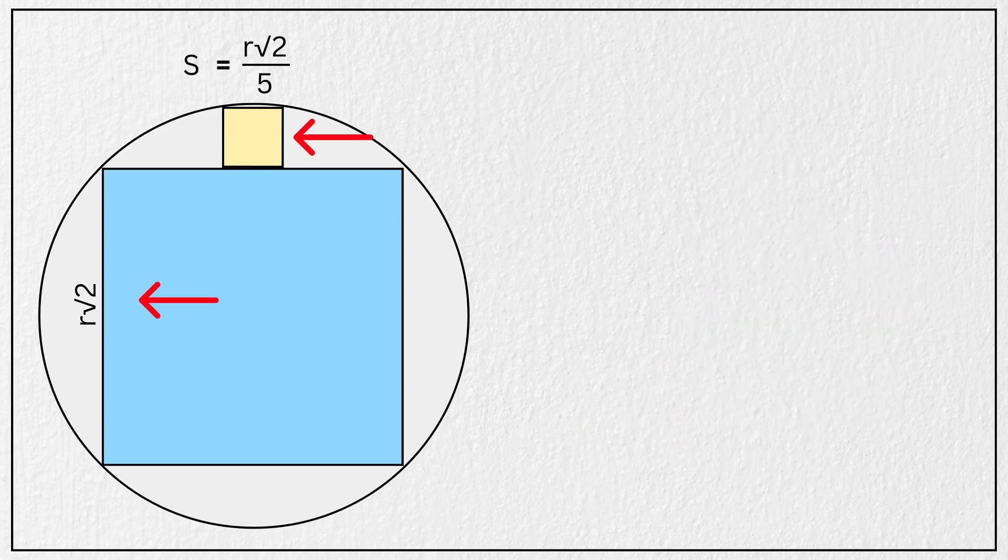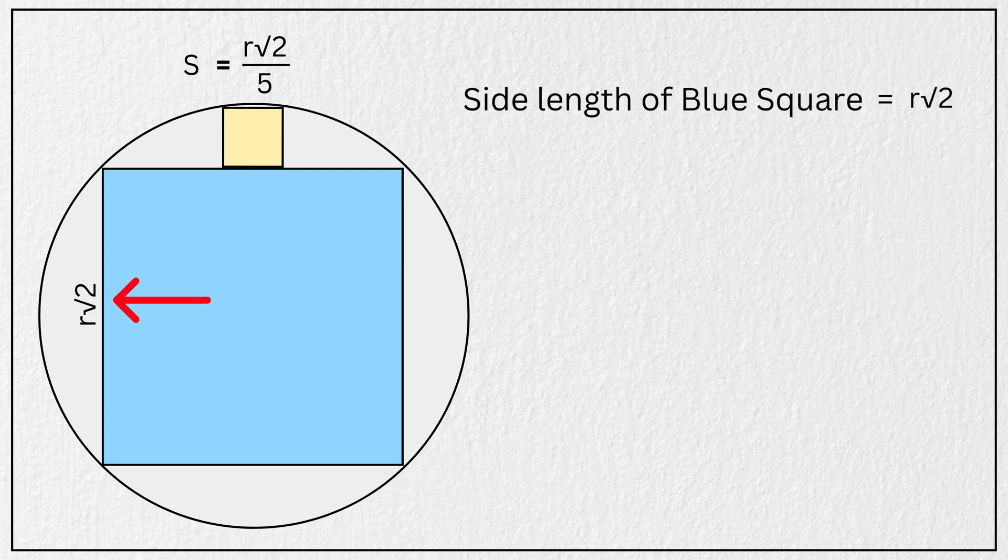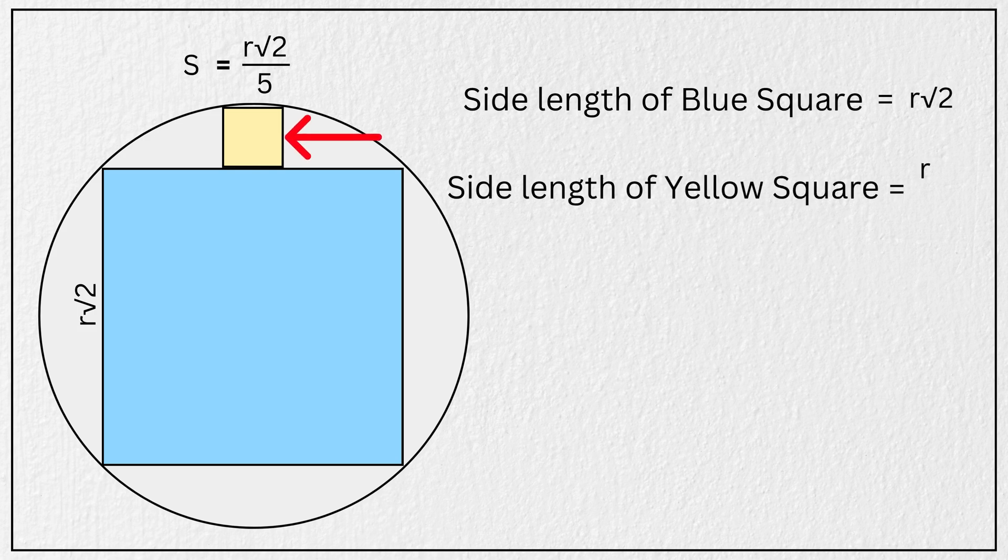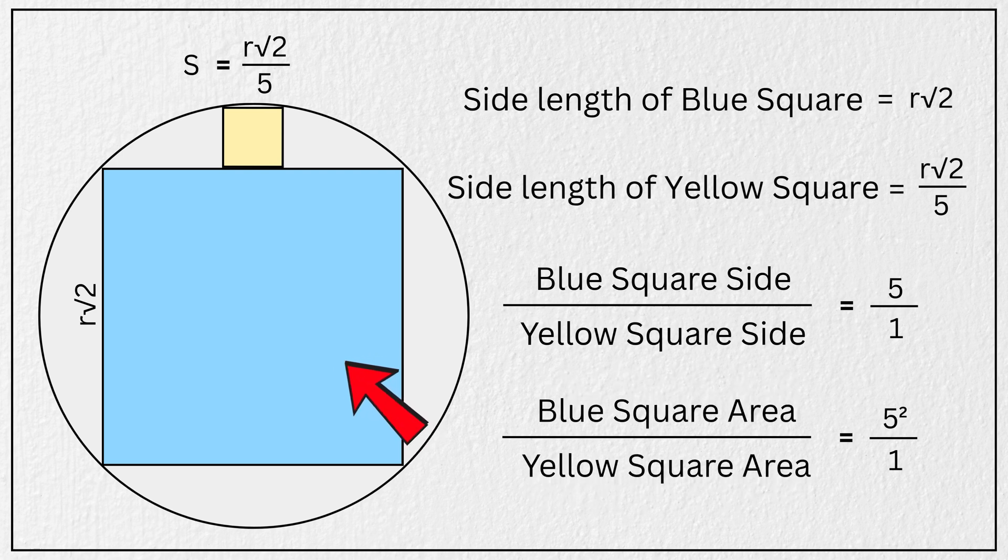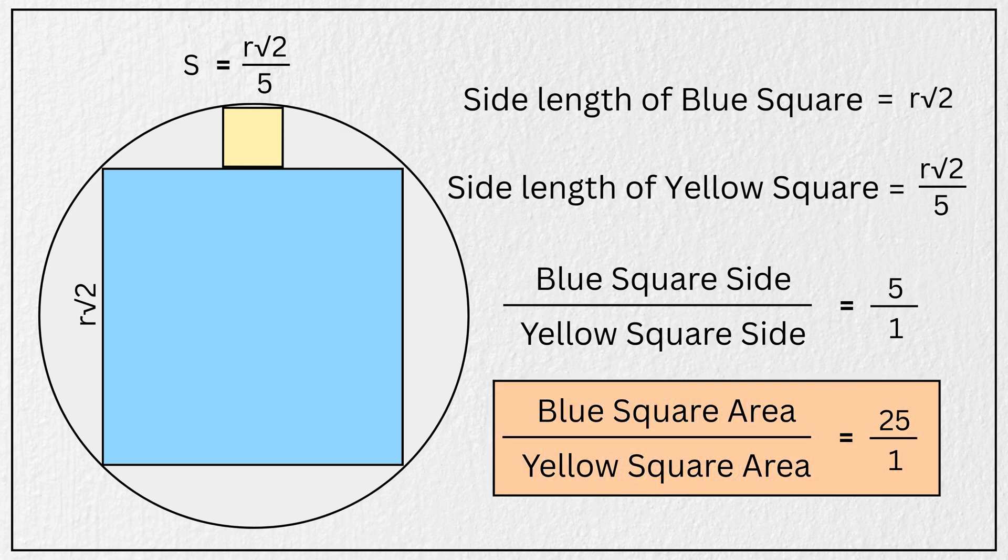Now let us go back and compare the side lengths of each square. The side length of this large square is the radius times the square root of two. And side length of this small square is the radius times the square root of two divided by five. So the ratio of their side lengths is five to one. And since area is proportional to the square of the side length, the area of this large square is five squared or 25 times the area of this small square. And that is our final answer.